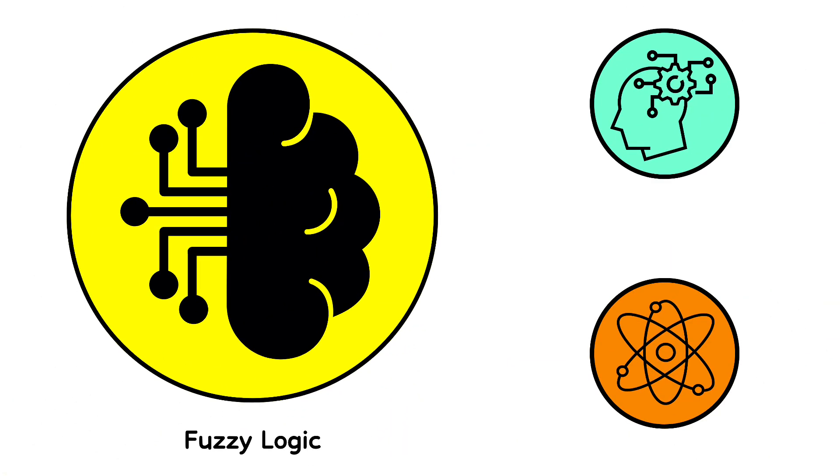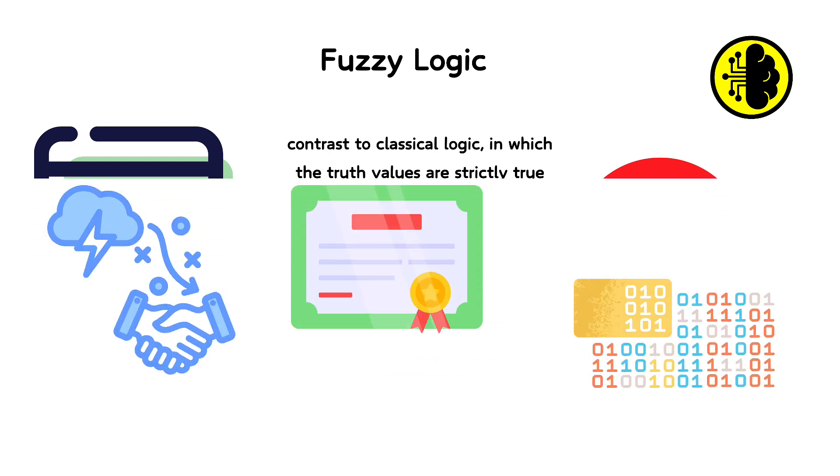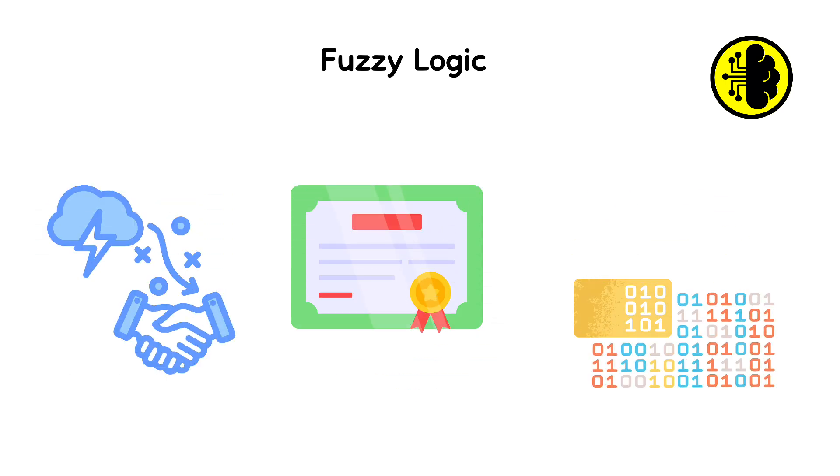Fuzzy logic is a form of many-valued logic, where the truth values of variables may be any real number between 0 and 1. This approach is in contrast to classical logic, in which the truth values are strictly true, 1, or false, 0. Fuzzy logic is particularly useful in dealing with problems in which the truth of something can be a matter of degree rather than a simple binary choice.